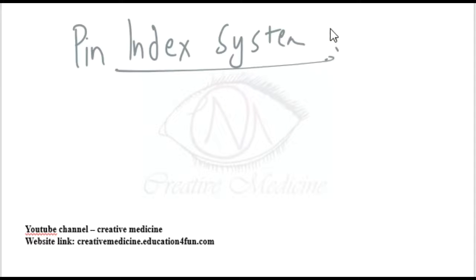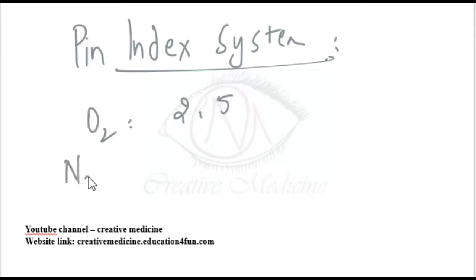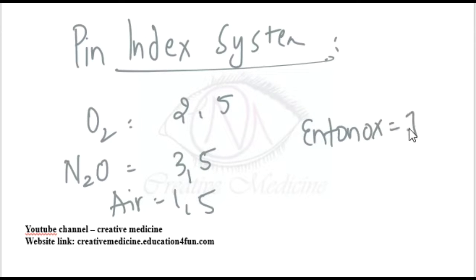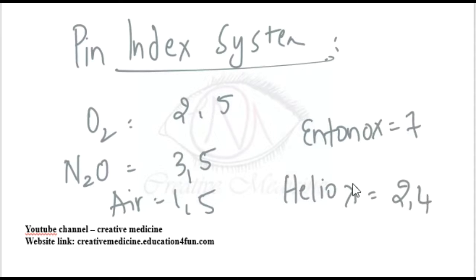Oxygen has a pin index system of 2,5. Nitrous oxide has a pin index system of 3,5. Air has a pin index system of 1,5. Entonox has a pin index system of 7. Heliox has a pin index system of 2,4.